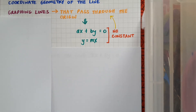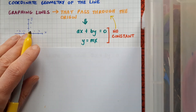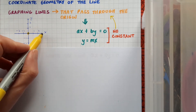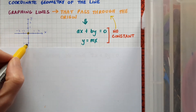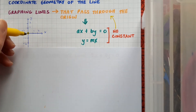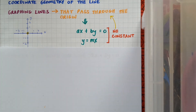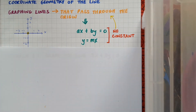To graph any line I need two points. In our last video on the intercept method, we found our points by figuring out where the line went through the x-axis and the y-axis. But with this type of line, it goes through the x and y-axis at the origin, so using that method would only give us one point. I need to find a second point some other way.